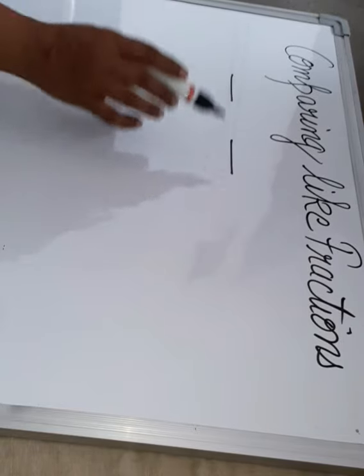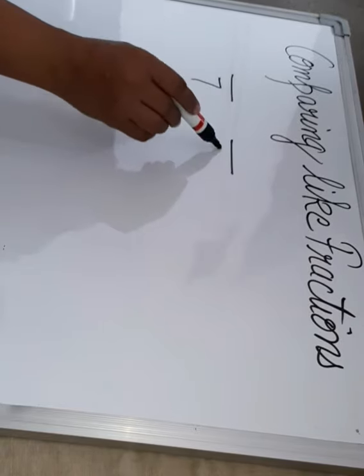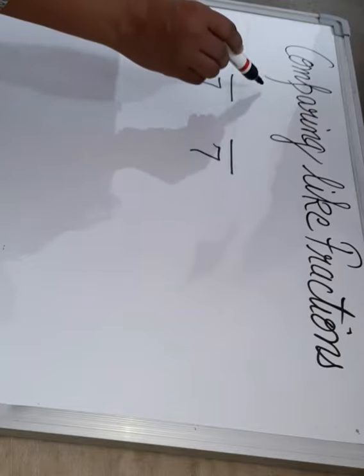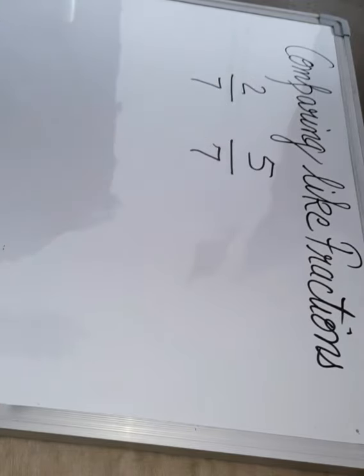Like fractions are the fractions with the same denominator. I am just showing two like fractions. Denominators are same. These are like fractions. How to compare these like fractions?